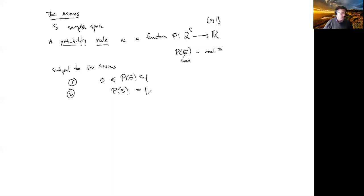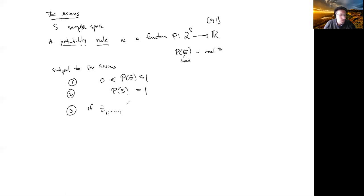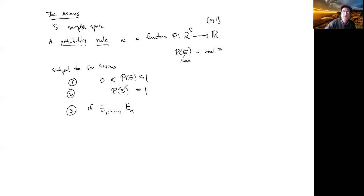The second axiom is that P of S is identically equal to 1. Now axiom three: let's take a finite number of events E_1 through E_n. We're going to assume they're mutually exclusive, meaning that for any pair E_i and E_j with i not equal to j, their intersection is empty — they're pairwise disjoint with no overlap.